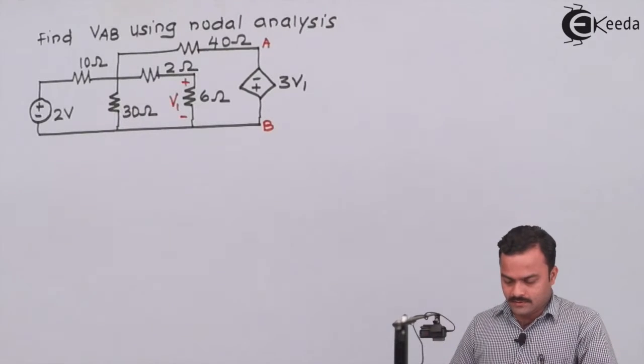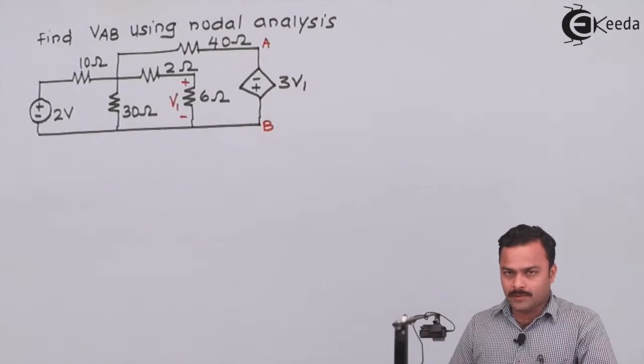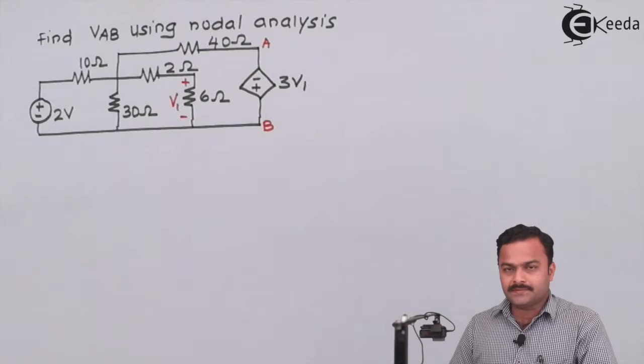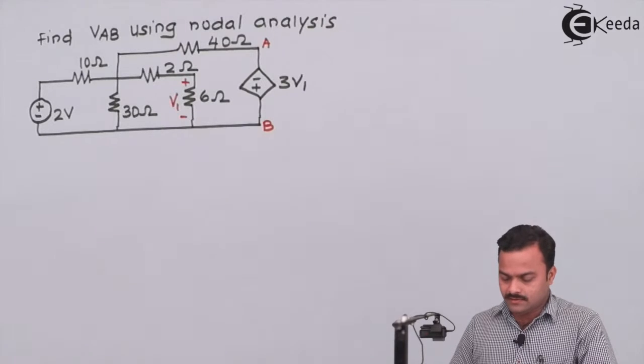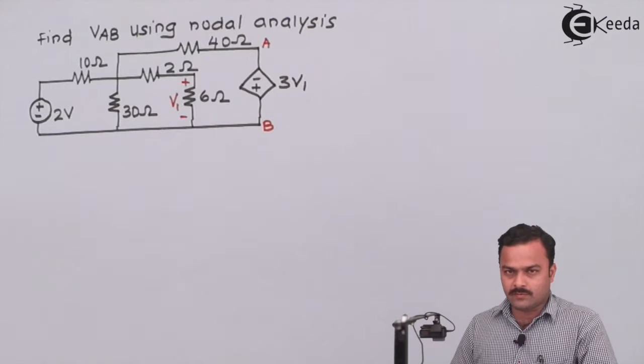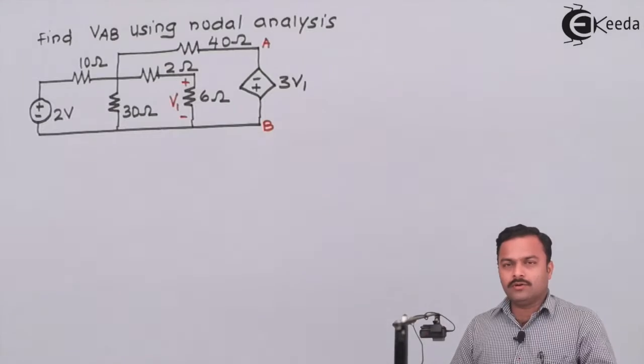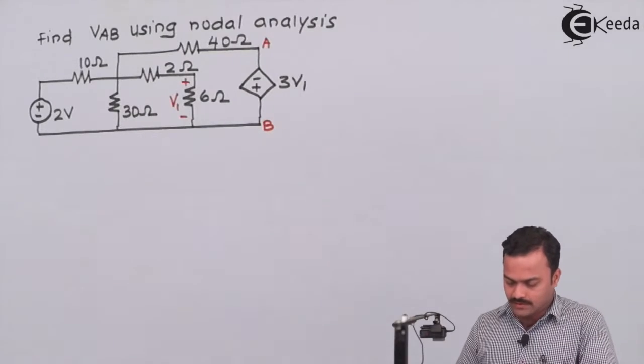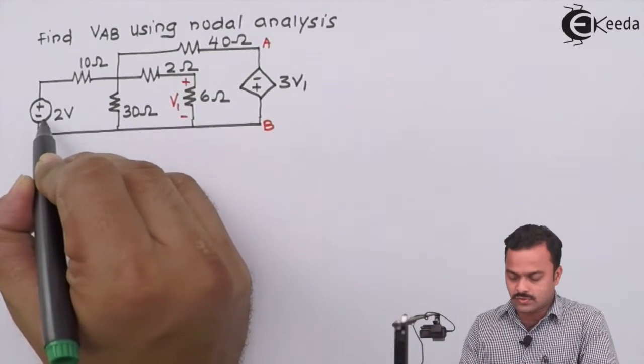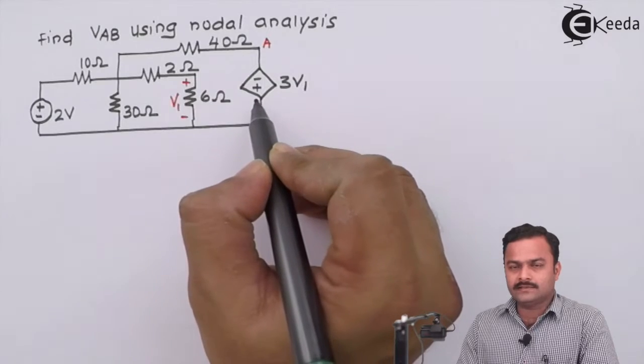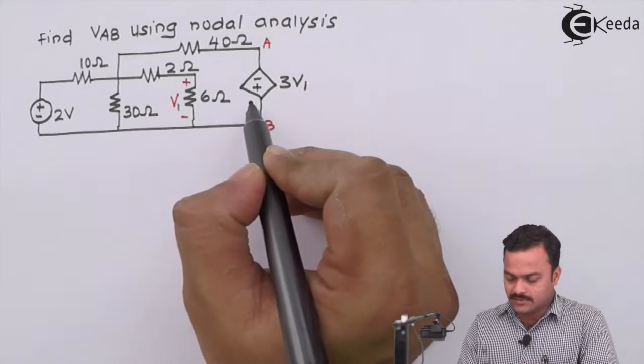Here is the problem. Though it is looking very simple, some concepts we will explain with respect to this problem. So over here, only two sources are given. Out of that, one is an independent voltage source and another is a dependent voltage source.